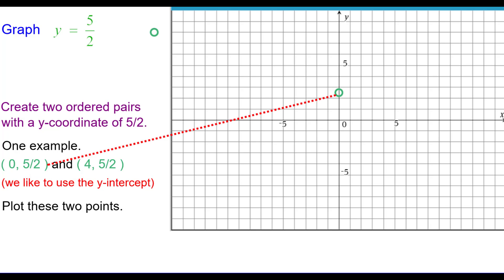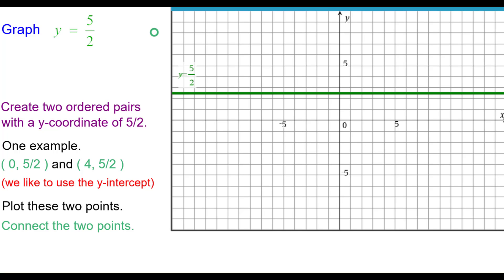Plot those two points: 0 comma 2 and a half, and 4 comma 2 and a half. Recall that two points determine a unique line, so we connect the two points. Notice it is a horizontal line, as expected, along the horizon.